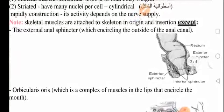Their activity, of course, depends on the nerve supply, which is a somatic nerve supply since it's voluntary. And by the way, this is the only voluntary type of muscles in our body.